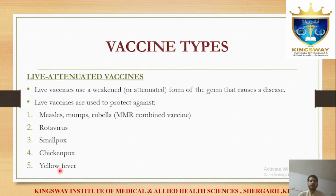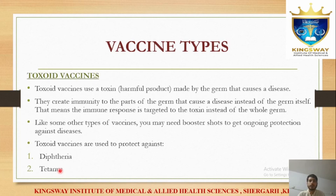Live attenuated vaccines use bacteria or viruses that are weakened but not fully killed — they are alive but attenuated. Which vaccines are live attenuated? Examples include measles, mumps, rubella, rotavirus, smallpox, chickenpox, and yellow fever vaccines.